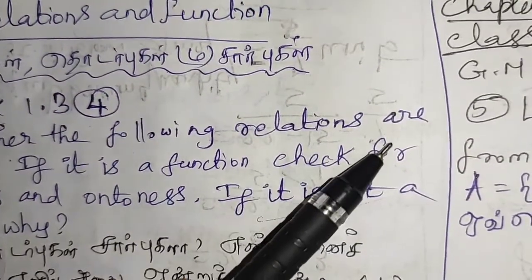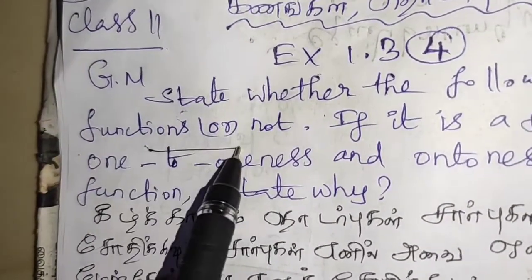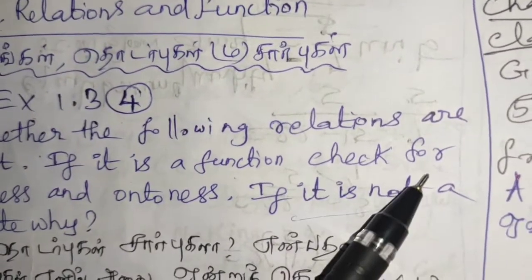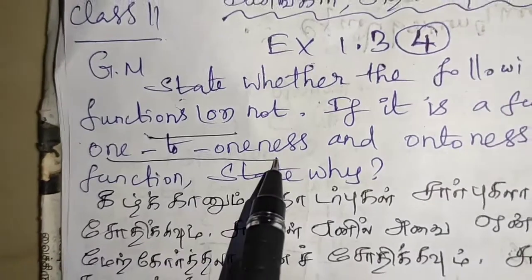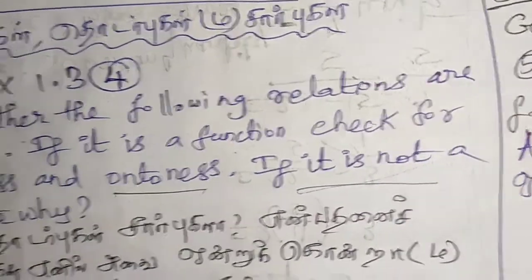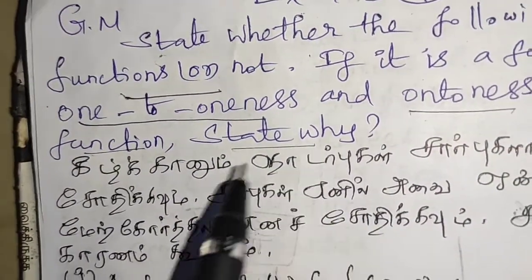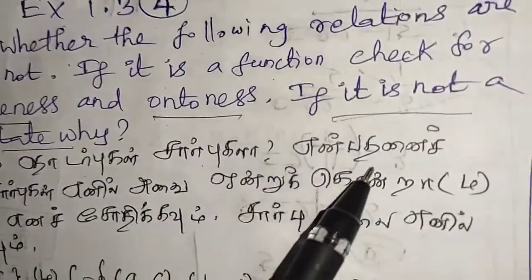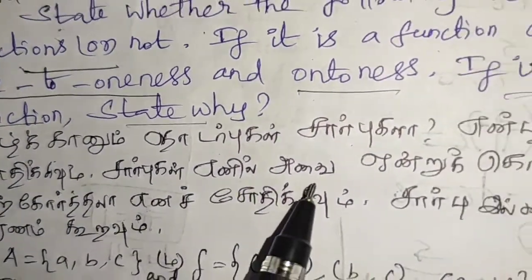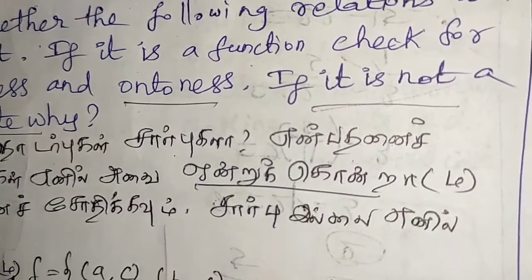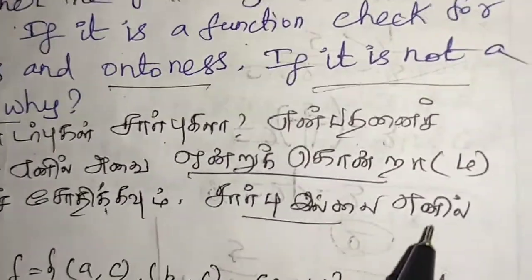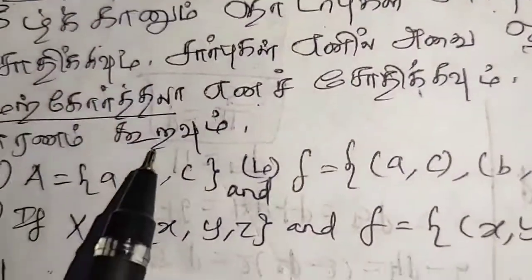State whether the following relations are functions or not. If it is a function, check for one-to-oneness and ontoness. If it is not a function, state why. We need to check: if it is a function, check those properties; if it is onto, verify; if it is not a function, give the reason.